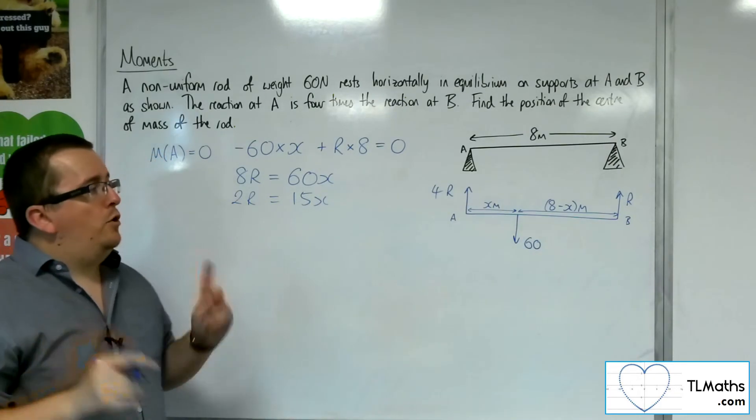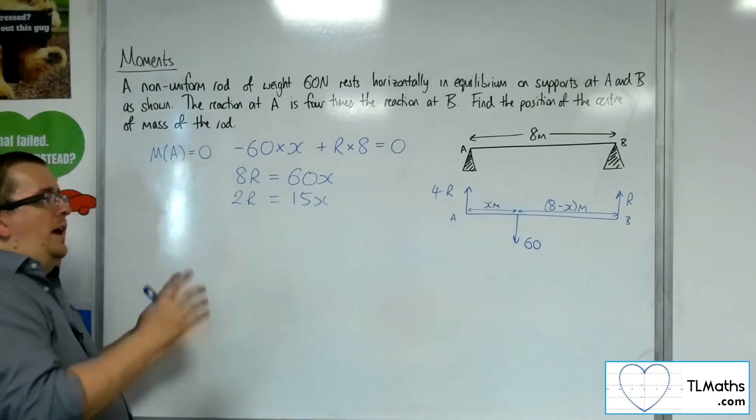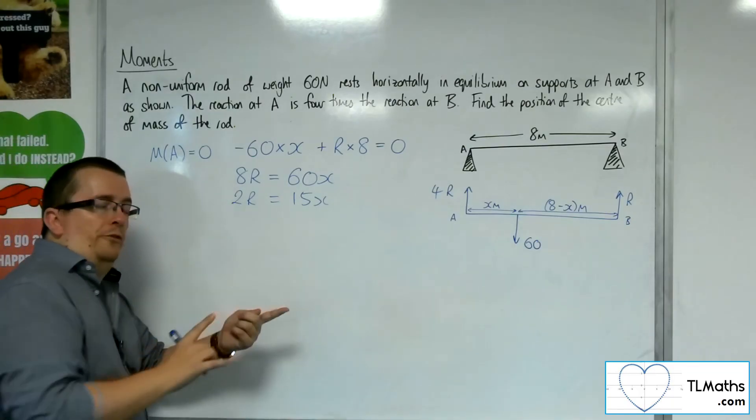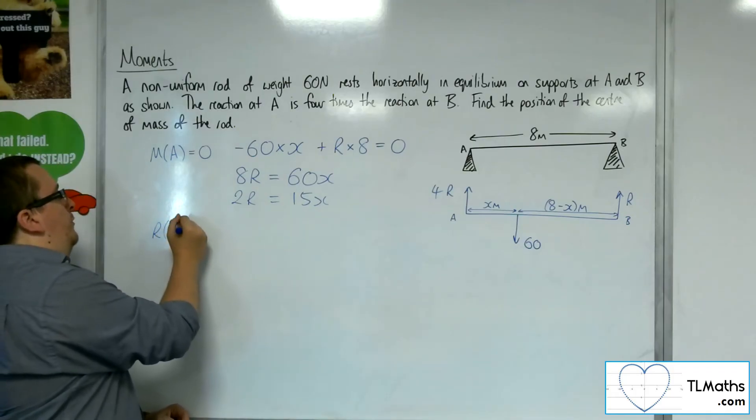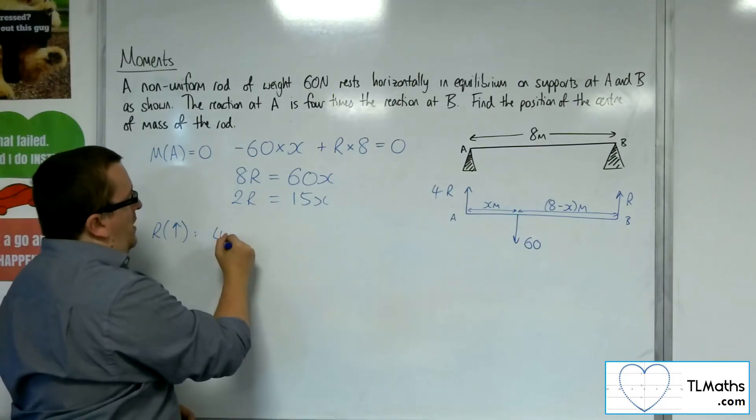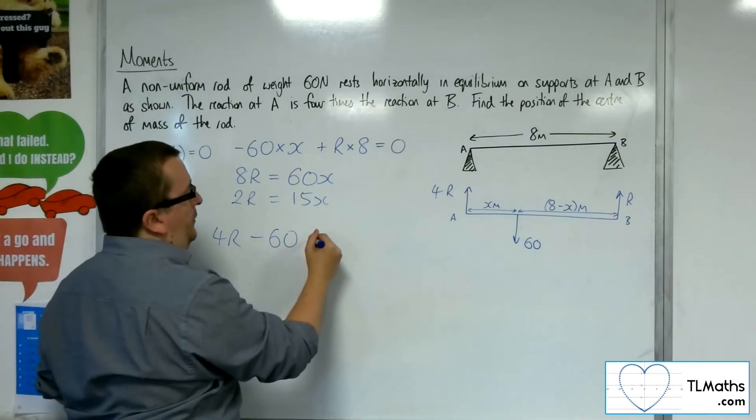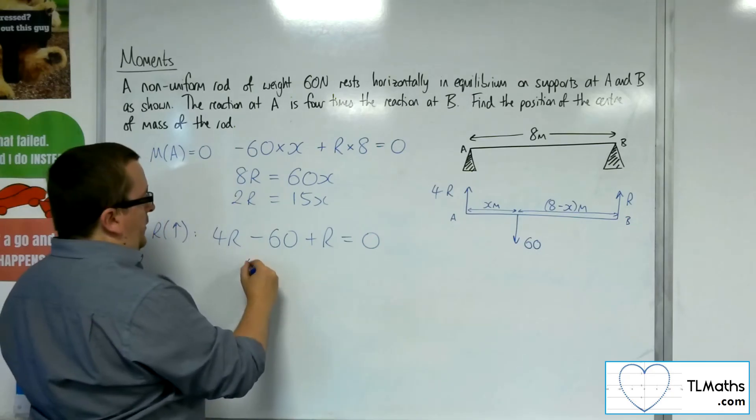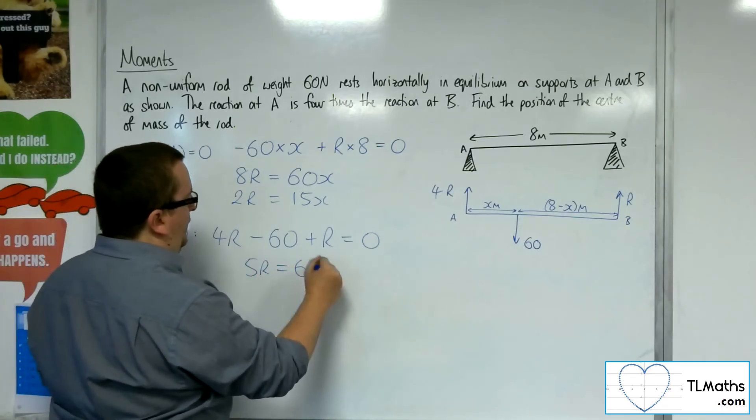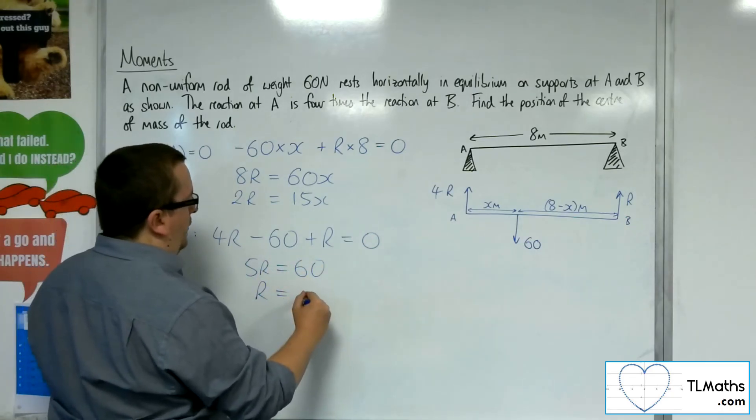Right, now what else do I know? I also know that the resultant force is going to be 0. So if I resolve taking upwards as positive, I've got the 4R working upwards, I've got the 60 working downwards, and I've got R working upwards. That's got to be equal to 0. So 5R has got to be 60, and so R has got to be 12.